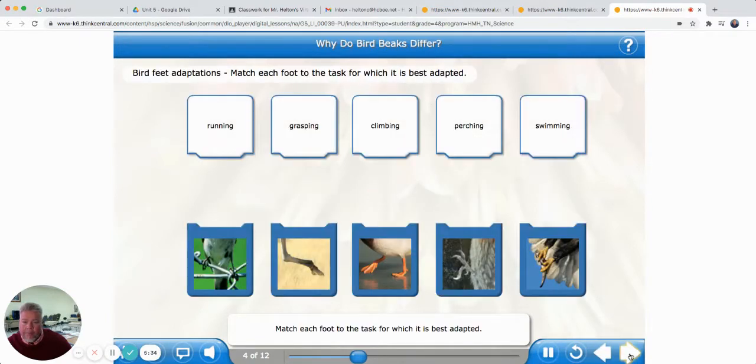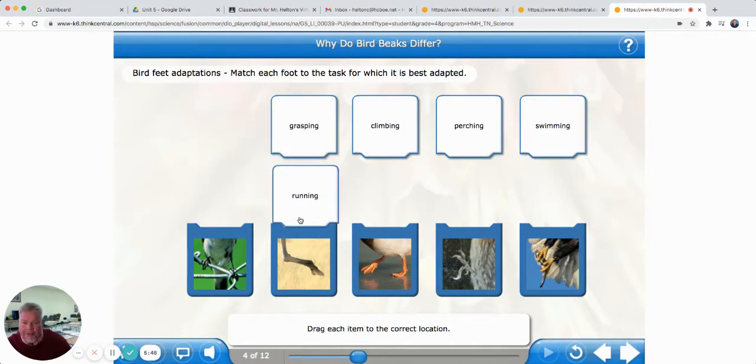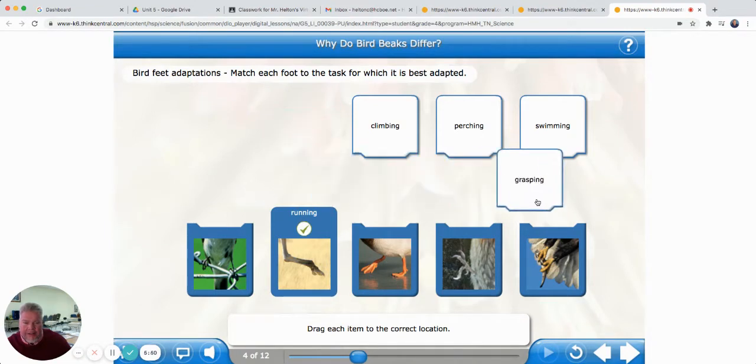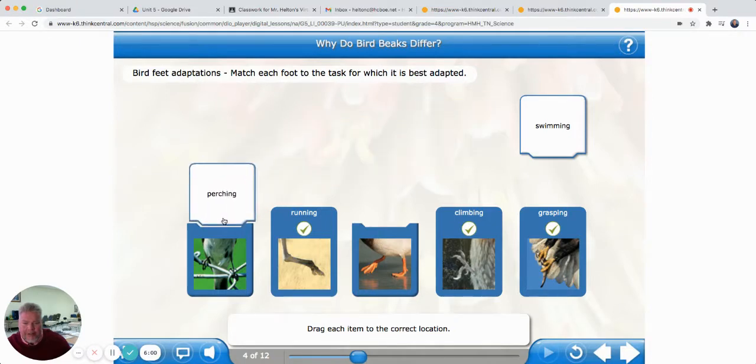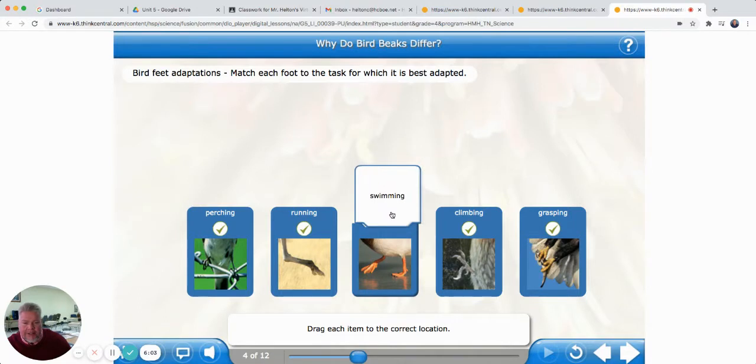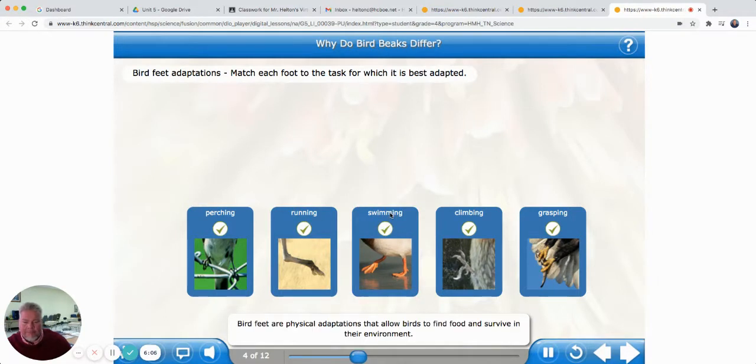The eagle uses these large, curved claws to snatch small animals from the ground. These feet can help the bird perch and balance on branches. So just like the bills, birds have different types of feet that are adapted to the environment they live in also. Match each foot to the task for which it is best adapted. Drag each item to the correct location. Running, that was the big old ostrich foot there. Grasping, I think that was the eagle's talons. Climbing, the woodpecker's going to climb around on the tree. Perching is this little bird. And swimming, of course, is a duck. Good work. Bird feet are physical adaptations that allow birds to find food and survive in their environment.